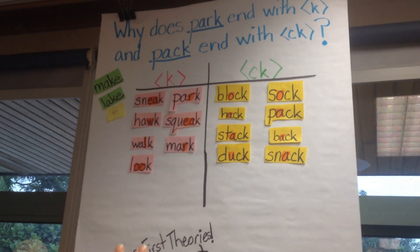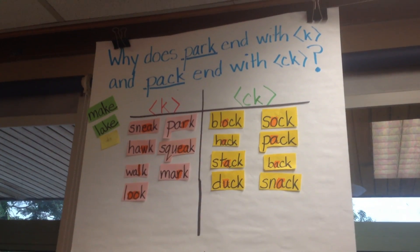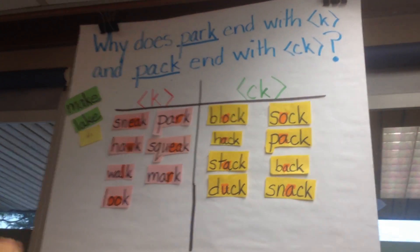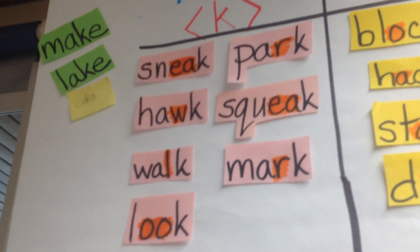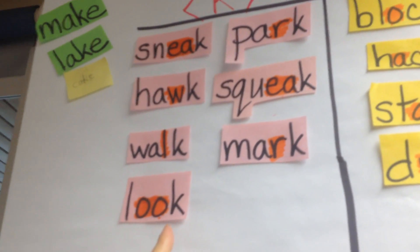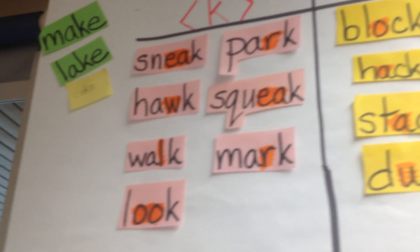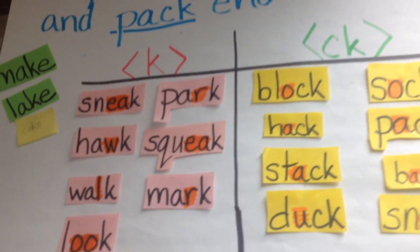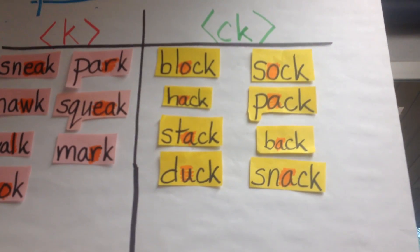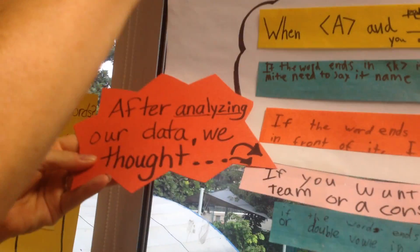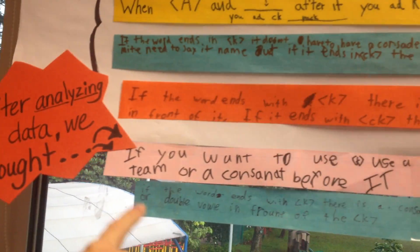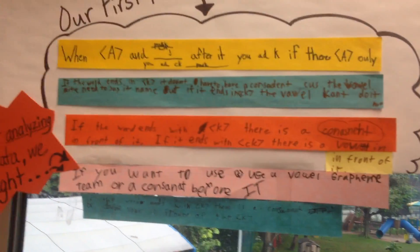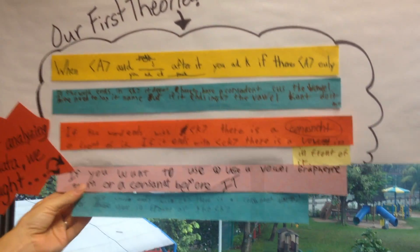I wrote the words up in a bigger space, and we went through and analyzed a little bit deeper. We looked at what's coming right before the final K at the end of a word — what's coming right before it on each side. After analyzing that together, some of the kids came up with some newer theories that are actually correct.